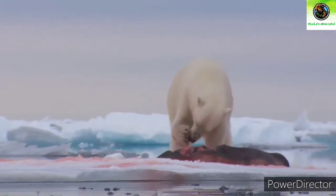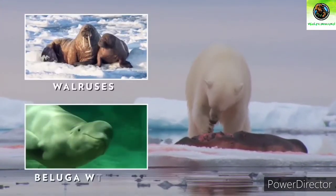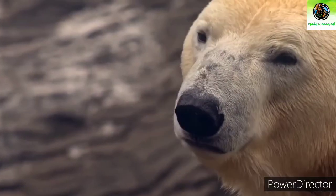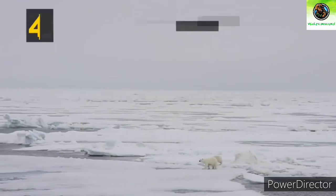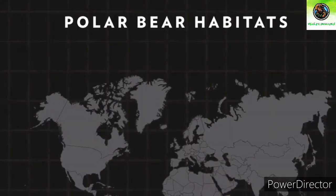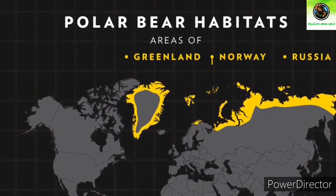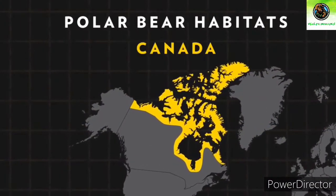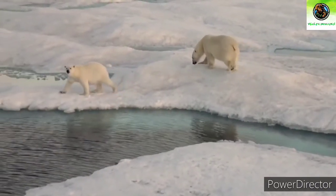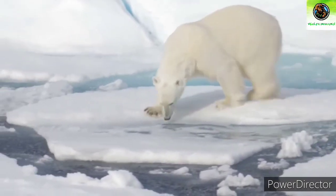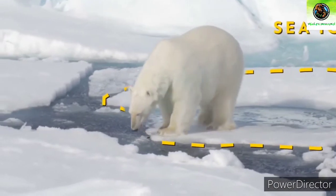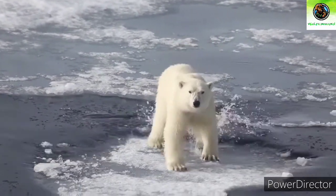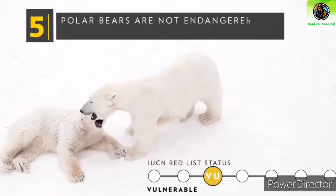Fact number one: polar bears are classified as marine mammals because they spend most of their lives on the sea ice of the Arctic Ocean, depending on the ocean for their food and habitat. They live on land but are classified as marine mammals because their maximum habitat and food source comes from the ocean. No other species of bear has been classified as a marine mammal.